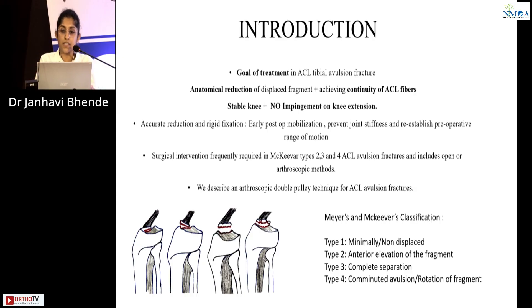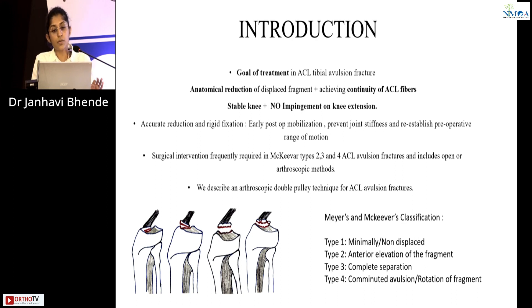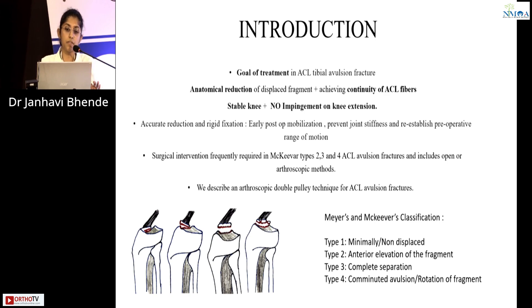The goal of treatment in ACL tibial avulsion fractures is anatomical reduction of the displaced fragment and achieving continuity of the ACL fibers. This gives us a stable knee with no impingement on knee extension. Accurate reduction and rigid fixation also allow for early post-operative mobilization, preventing joint stiffness and re-establishing pre-operative range of motion.